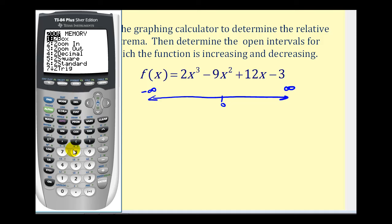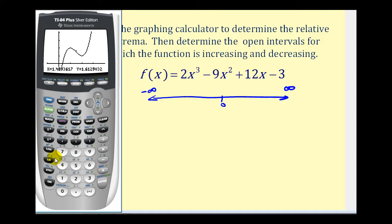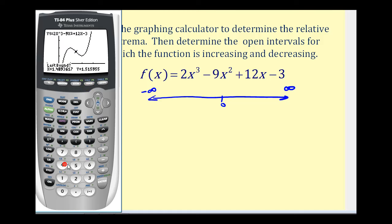Let's zoom into this area to get a closer look. Press zoom, option two, and move the blinking pixel closer to the area we want to zoom into, then press enter. Now we have a much better view of where the graph changes from increasing to decreasing and back to increasing. To find the relative maximum, press second trace for the calculation menu, then option four for maximum. Move to the left side of the high point and press enter, then move to the right side and press enter. When it says guess, move the cursor closer to the actual maximum and press enter. The relative maximum is the point one, two.